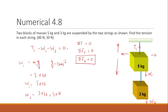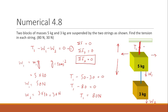Putting the values into the equation: T1 equals 50 plus 30 equals 80 newtons. So the tension in the upper string, which is supporting both weights, is equal to 80 newtons.